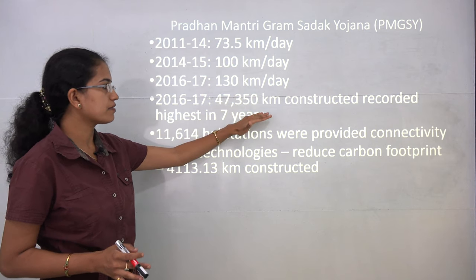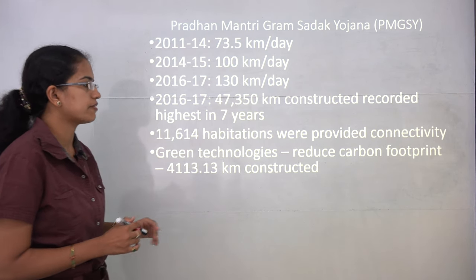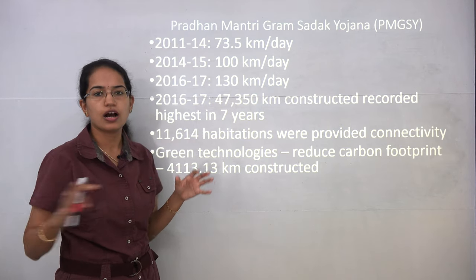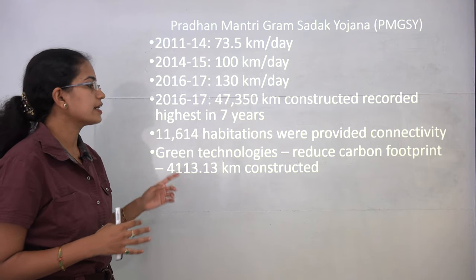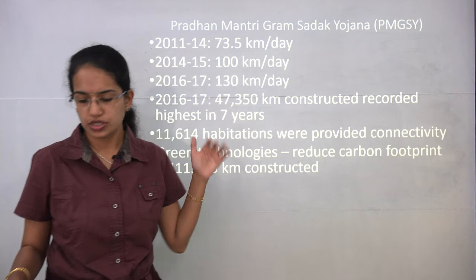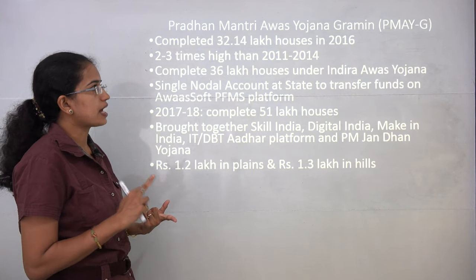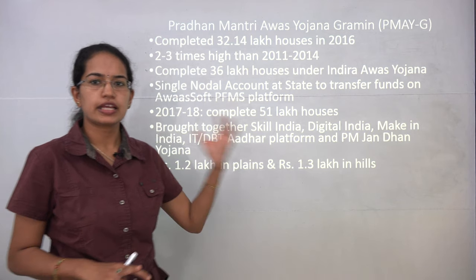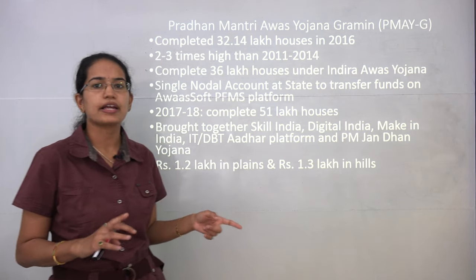In the last seven years, this year has recorded the highest construction of rural roads — nearly 47,000 kilometers have been constructed. Nearly 11,000 habitations have been connected with the road network, and greener technologies are now being used to reduce the carbon footprint for road construction.